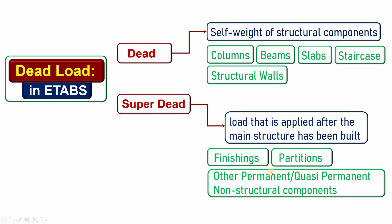What do we mean by permanent and quasi-permanent? Permanent are those that will be there with the structural members for the rest of its design life. Quasi-permanent are those loads that will stay with the structure at least for fifty percent of the design life of that structure.